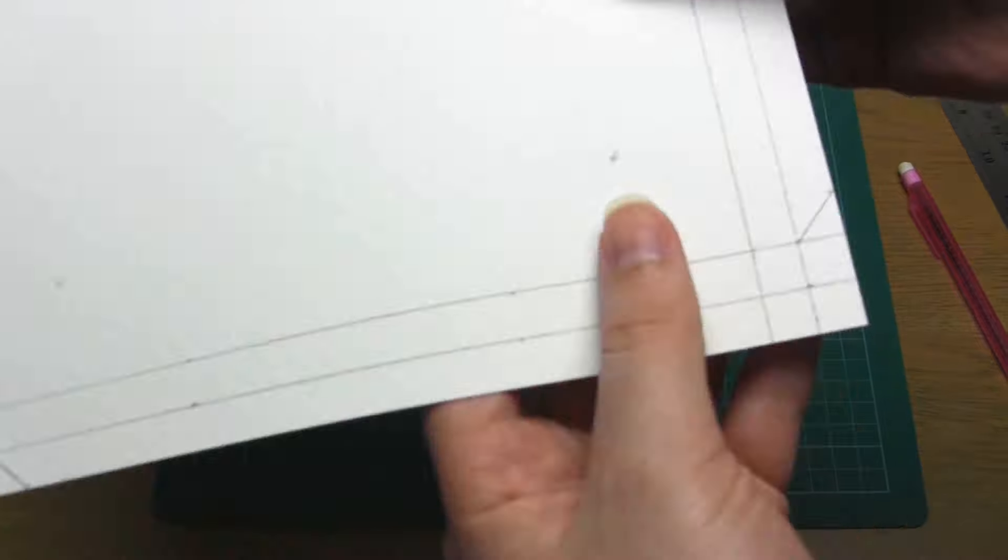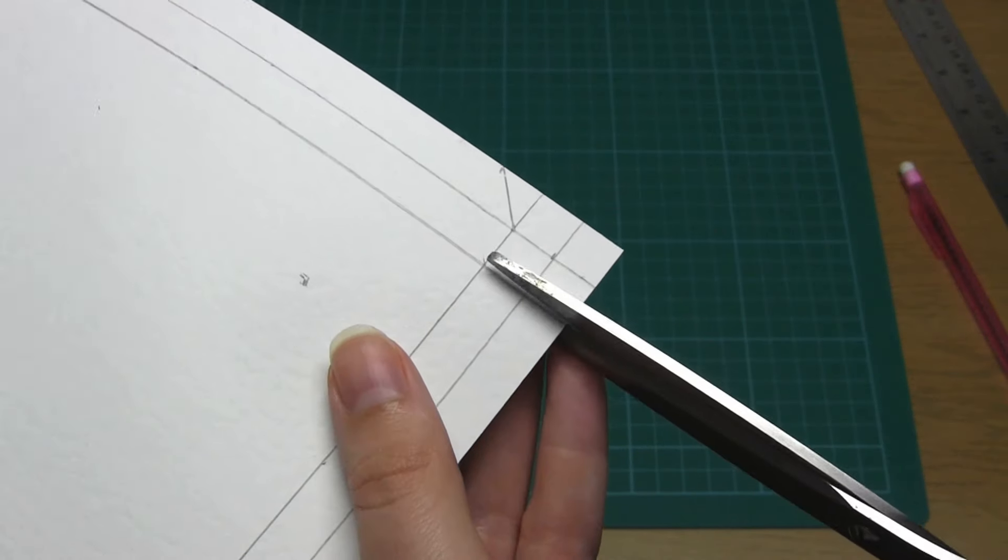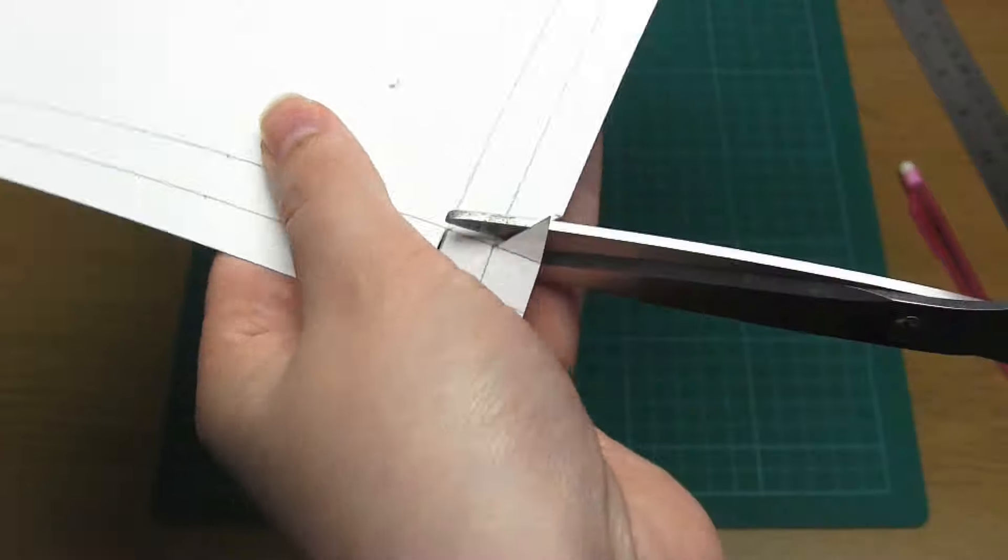Your card should now look like this. You then need to cut out these corner squares plus that diagonal section.